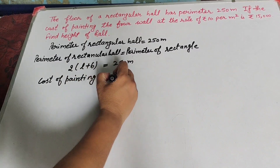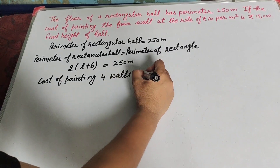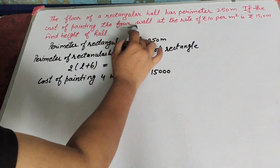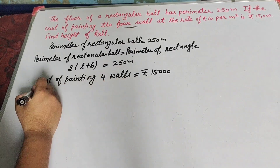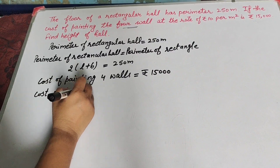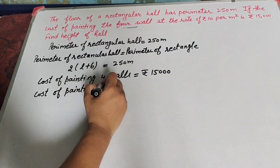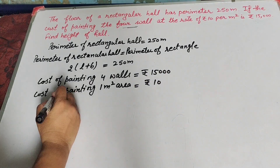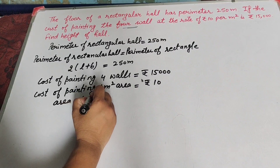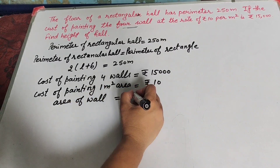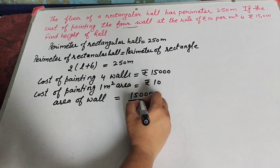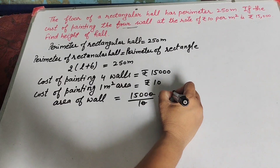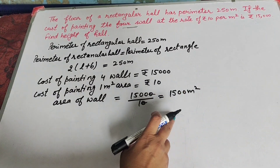The cost of painting the four walls of the hall is rupees 15,000, and the cost of painting one meter square area is rupees 10. Now we find the area of 4 walls: area of 4 walls equals 15,000 divided by 10, which is equal to 1500 meter square.